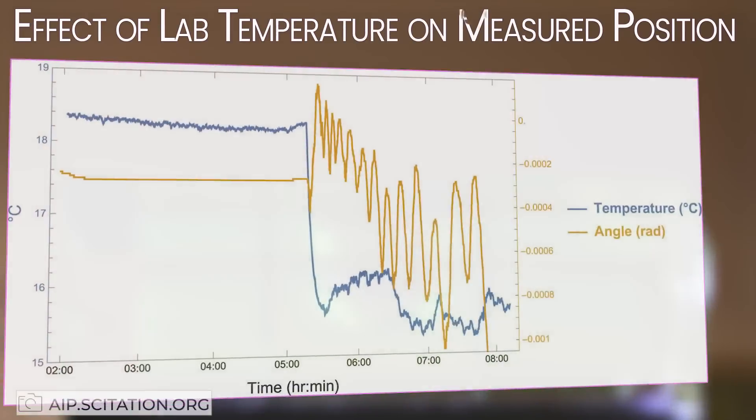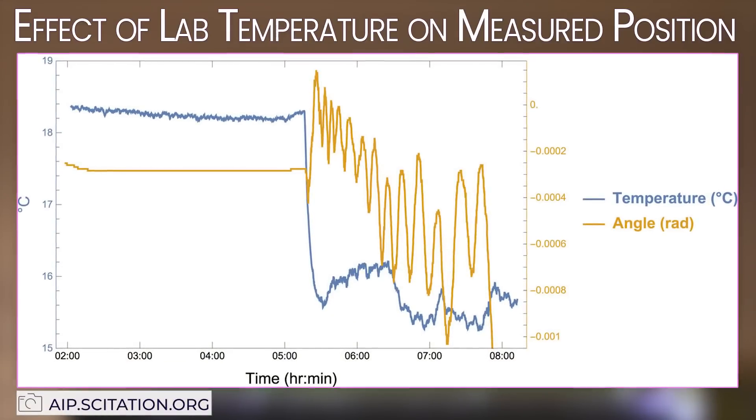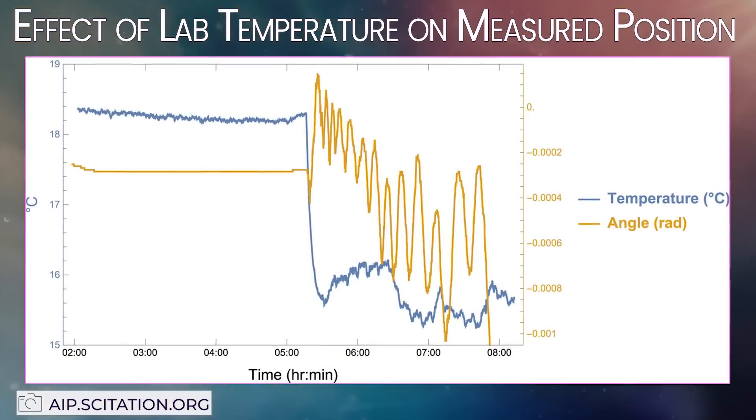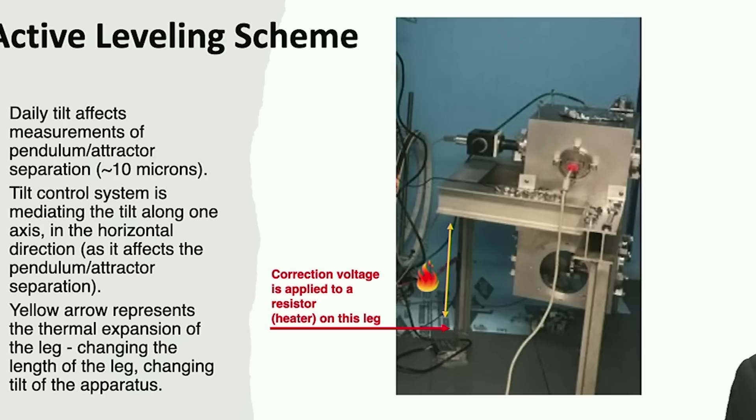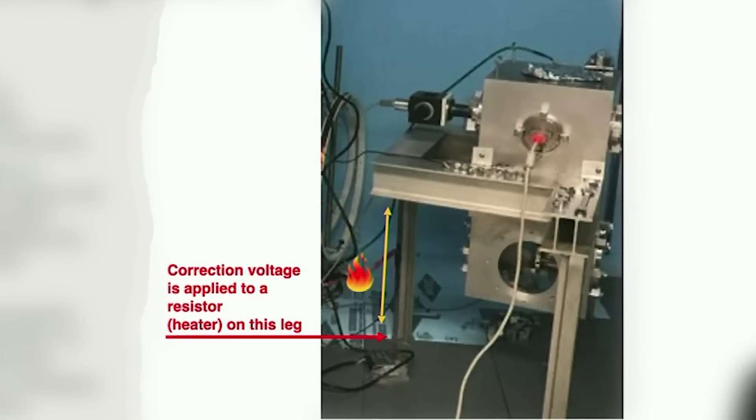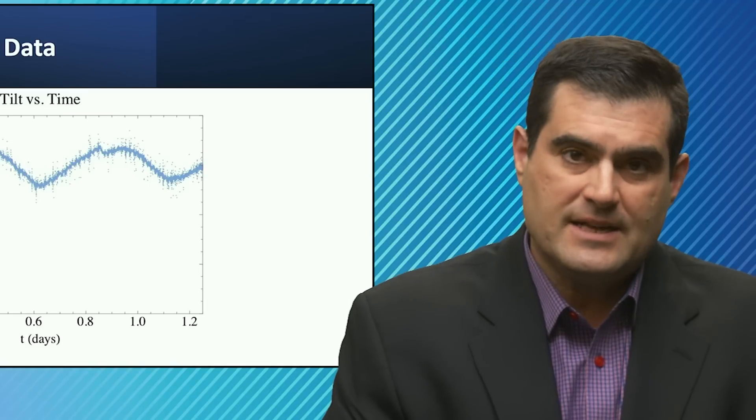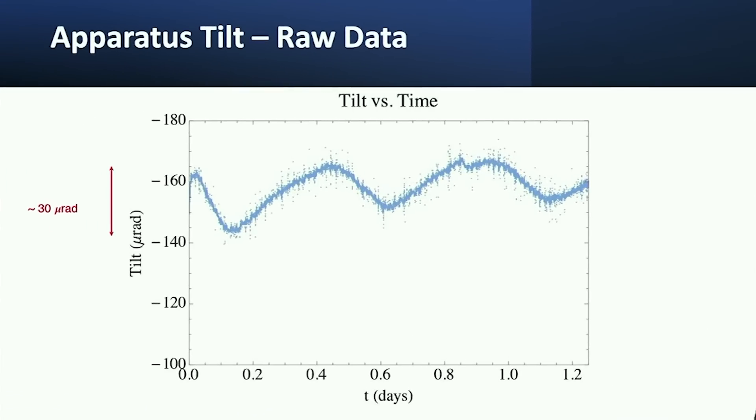It can confuse you that you've measured a deviation from the inverse square law when actually it was just a deviation of your apparatus's tilt. So they actually build in what's called temperature compensation, where they can stretch or shrink the length of a leg of their apparatus to compensate for thermal variations in the laboratory or in the apparatus itself.